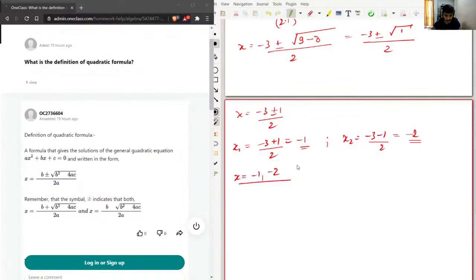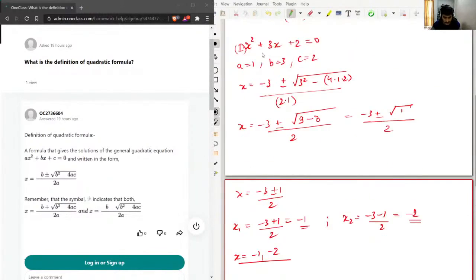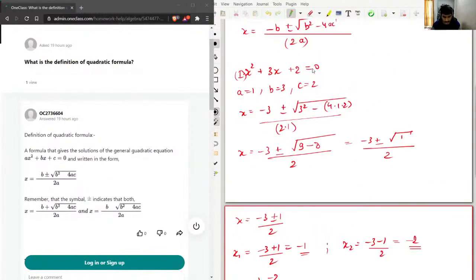These are the roots of the equation. I'll just solve this equation using the factorization method. So this is x squared plus x plus 2x plus 2 equal to 0. Then I can take x common, so this will be x plus 1 plus 2 times x plus 1.